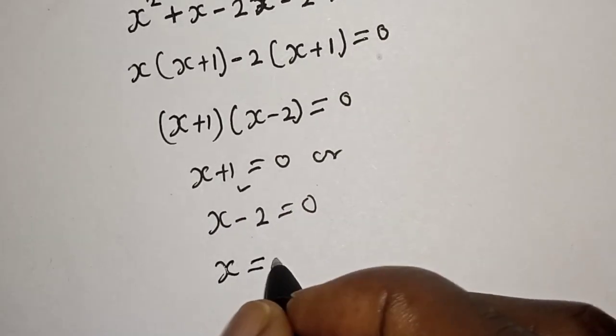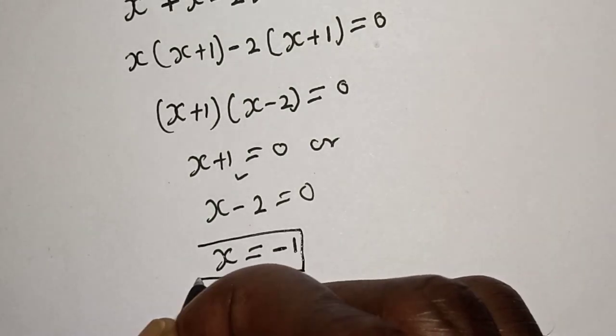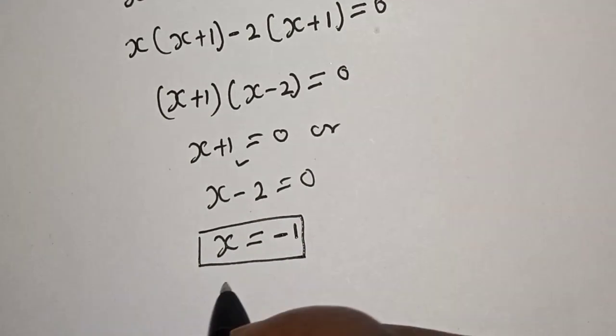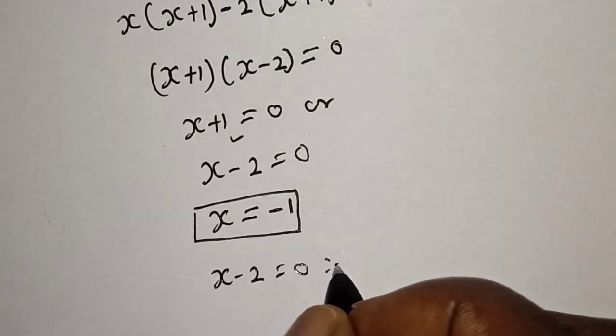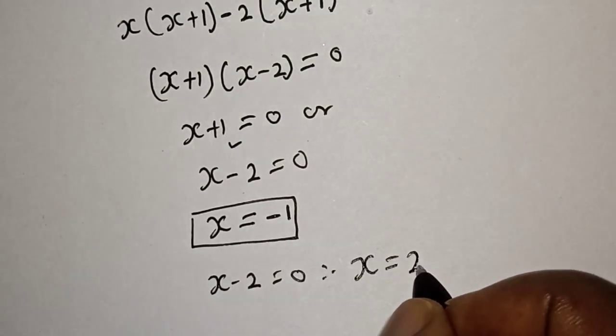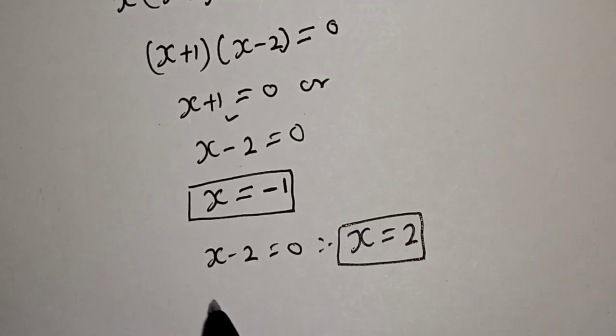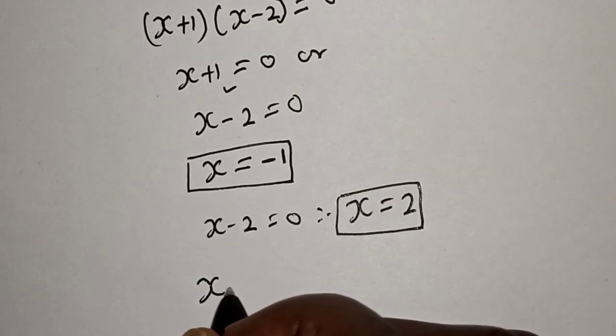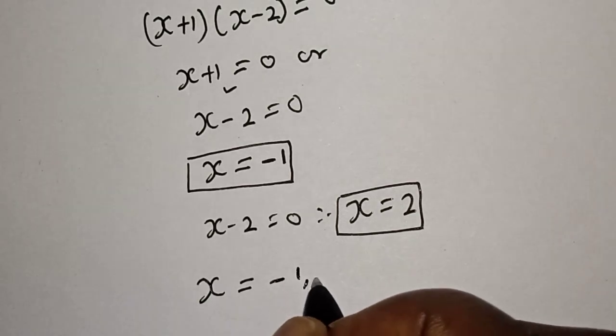From x plus 1 equals 0, x is equal to minus 1. From x minus 2 equals 0, x is equal to 2. Therefore our final answers are x is equal to minus 1 and 2.